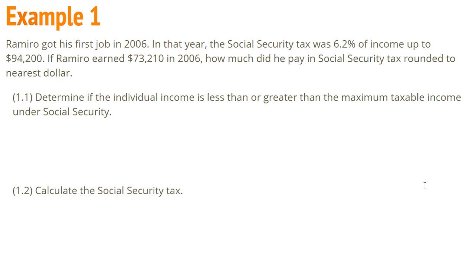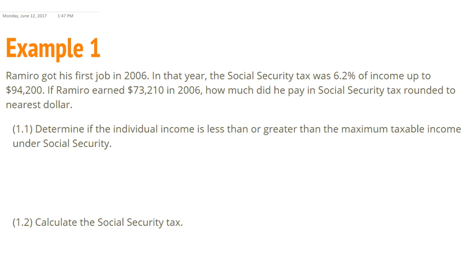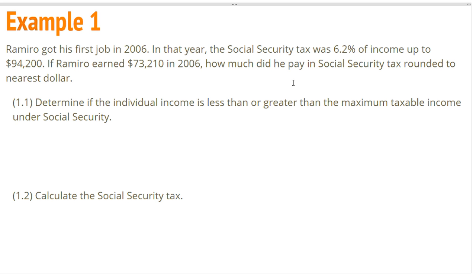Let's take a look at how we calculate a social security tax. Romero got his first job in 2006. In that year, the social security tax was 6.2% of income up to $94,200. If Romero earned $73,210 in 2006, how much did he pay in social security tax, rounded to the nearest dollar?